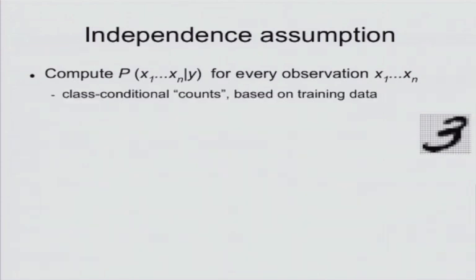How can we estimate the probability? The simplest thing would be to count. We need to compute how many times X1 through Xn occur in class Y. So we could just take this particular observation, this set of symptoms, or this set of pixel values.